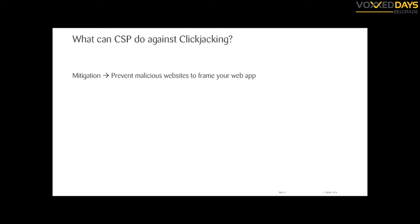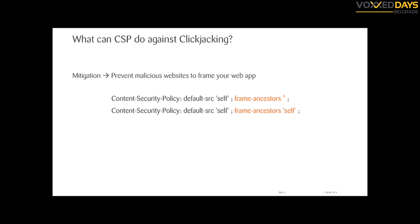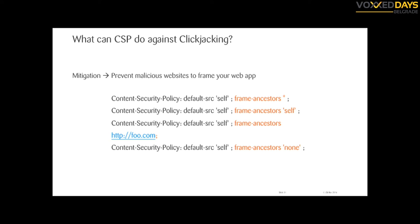CSP also has a 'frame-ancestors' directive to control who is allowed to frame you. If you put a star, everybody can frame you. If you put 'self,' only your own origin can. You can put a list of trusted partner websites, or set it to 'none' which is the most secure — nobody can frame you. For now it's recommended to keep both the CSP directive and the older X-Frame-Options header (with 'deny,' 'sameorigin,' or 'allow-from'), but in the future CSP is going to replace all these individual security headers.